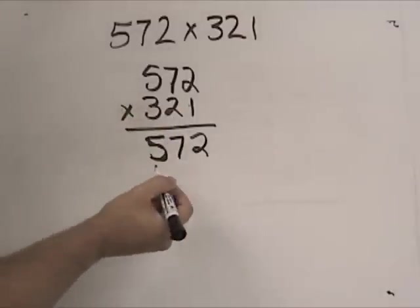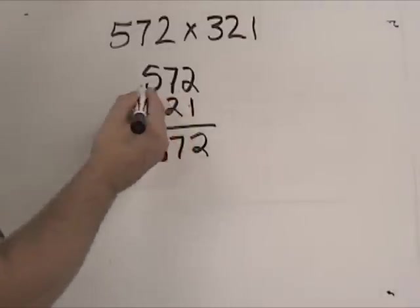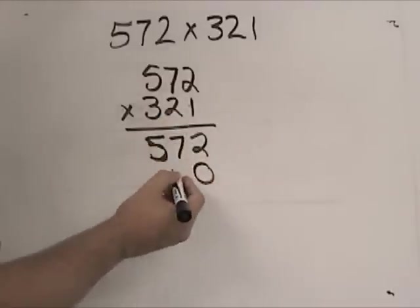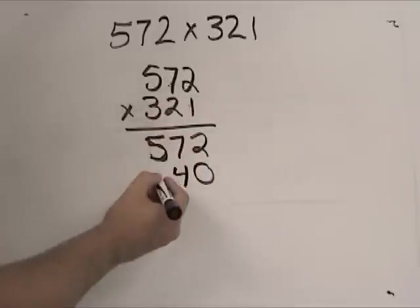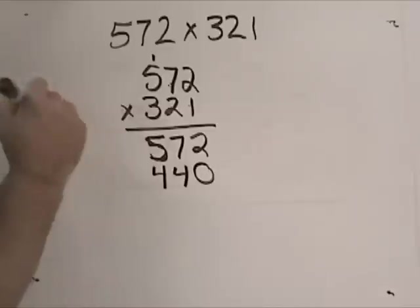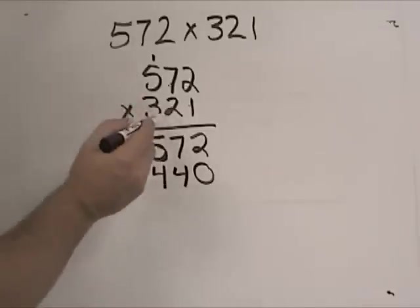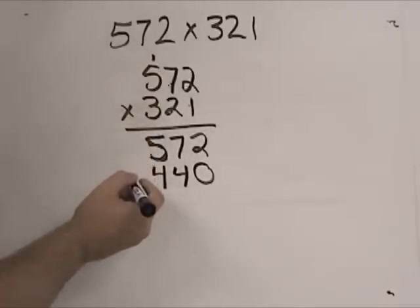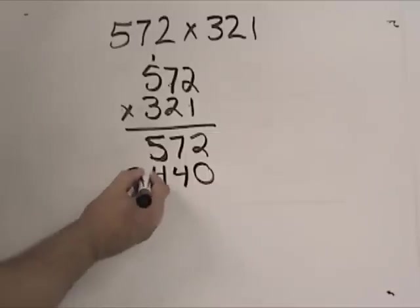Now, because I'm multiplying this, this is actually 20 times that number. I'm going to put in my placeholder, and we're going to go right through. 2 times 2 is 4. 2 times 7 is 14. Put my 4 there, carry up my 1 to add it to this product. 2 times 500 is 1,000, and 1,000 plus 1,000 is 2,000.